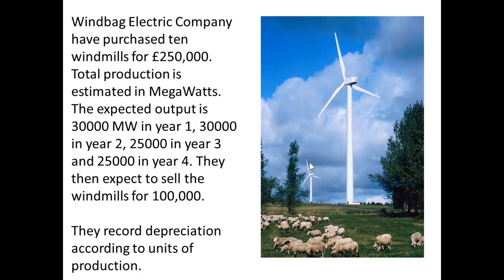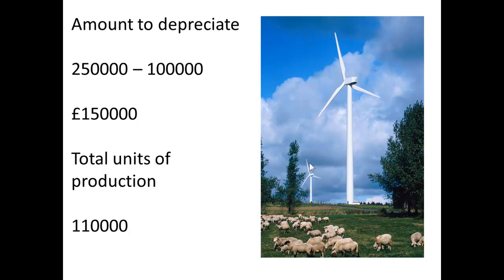Now a slightly different example. An electric company purchases 10 windmills for £250,000. Their production is measured in megawatts: 30,000 megawatts in year 1, 30,000 in year 2, 25,000 in year 3, and 25,000 in year 4. They expect to sell the windmills for £100,000 and will depreciate on the basis of units of production. The amount to depreciate is 250,000 minus 100,000 = £150,000. Total units of production are 30,000 + 30,000 + 25,000 + 25,000 = 110,000 megawatts.